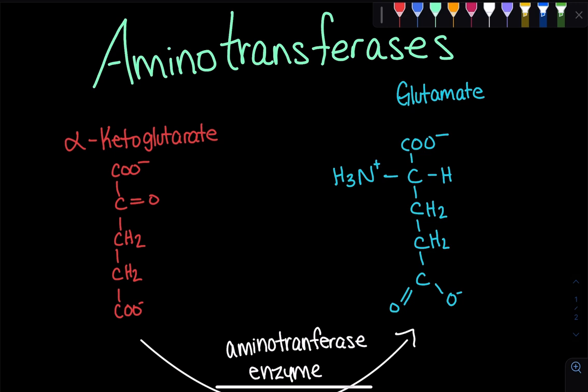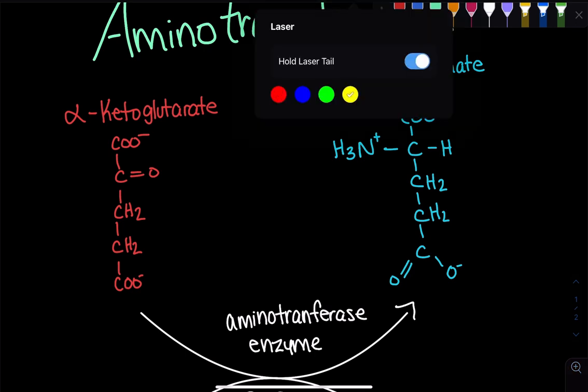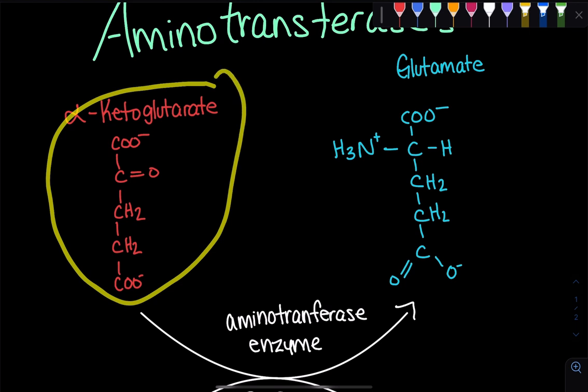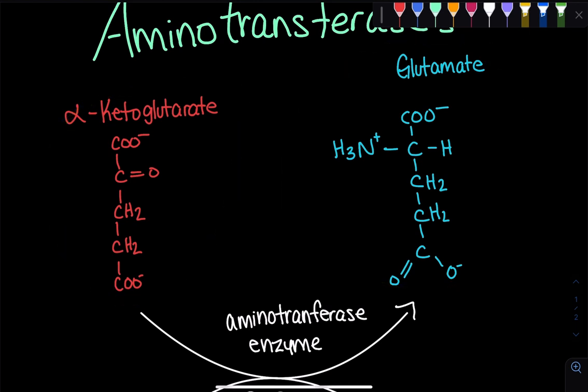We can go over this one example where the most common example that we see is where we have alpha-ketoglutarate being converted into glutamate. Now how does this reaction happen?